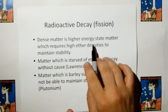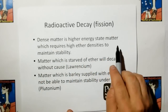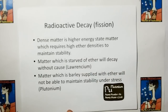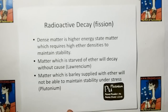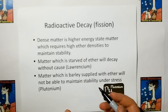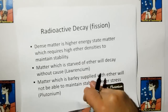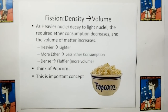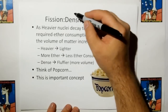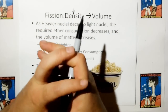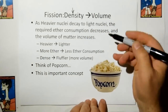Radioactive decay: dense matter is a higher energy state matter which requires higher ether densities to maintain stability. Matter which is starved of ether will decay without cause, like lawrencium does. Matter which is barely supplied with ether will not be able to maintain stability under stress — like plutonium getting its nucleus hit by a neutron — it's barely stable. But hydrogen can withstand a lot of stress because it doesn't require a lot of ether to maintain its state. With fission, fissile materials go from highly dense material to a more diffuse material — we convert density to volume. It's like popcorn.